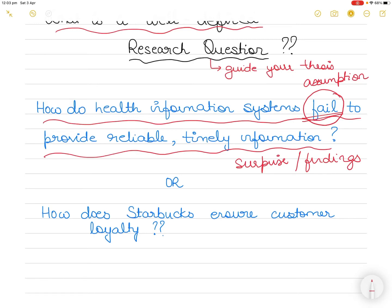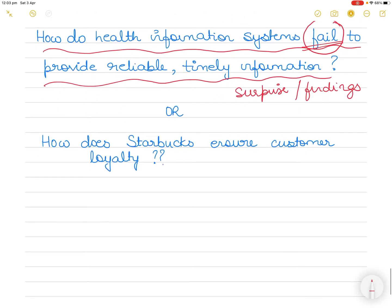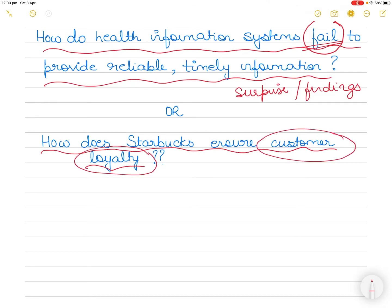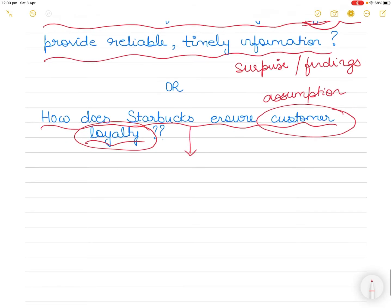Let's look at the second question: how does Starbucks ensure customer loyalty? Again, what is the problem? You are assuming that Starbucks has a loyal base of customers. This is an assumption - you are starting with an assumption and you have not discovered anything. So if I had to reframe this question, I might say: what are the impacts of Starbucks on the consuming patterns of its customers?